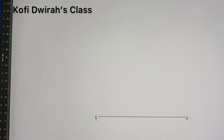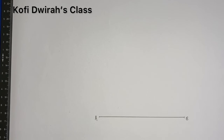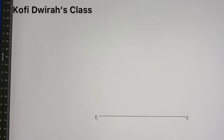Now, we are going to construct a perpendicular line to line AB at point A. That was our last lesson, so if you don't know how to construct this, you can check on my channel and you'll find that lesson — how to construct a perpendicular to a given line at the end of the line. We are going to use the same method.